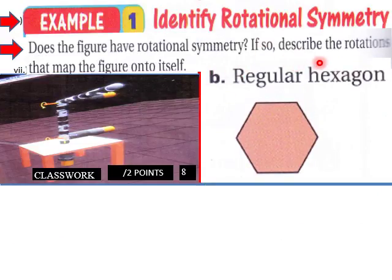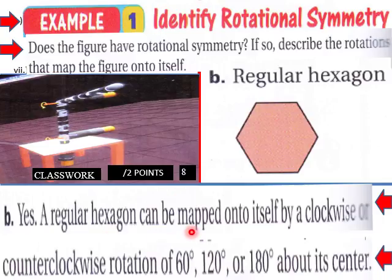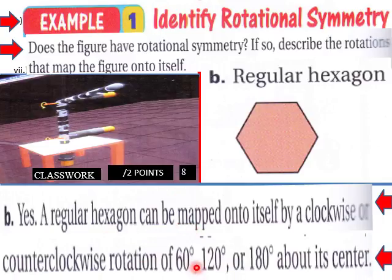Part 1B: does the figure have rotational symmetry? If so, describe rotations that map the figure onto itself. We have a regular hexagon. It can be rotated 60, 120, or 180 degrees about its center — so you can go 60, then 120, then 180, where this corner ends up over here.